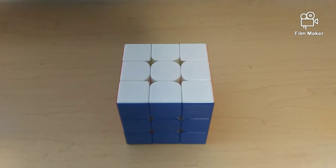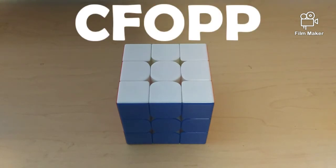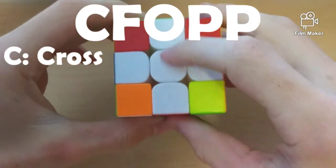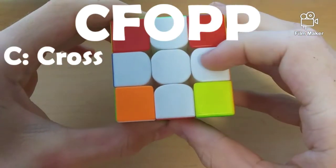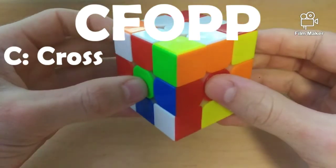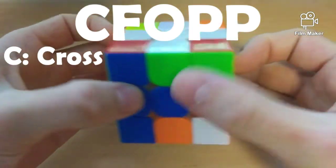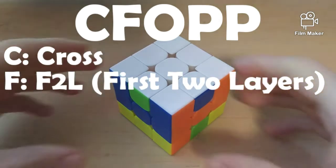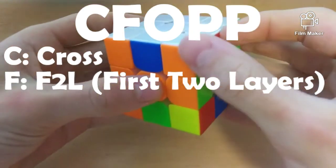First, I will explain what the acronym CFOPA or CFOPI stands for. Similar to CFOP, starting off we have C, and C means cross. But in this method, it doesn't matter how you solve the cross. It does not need to be correct. Next up, we have F, which stands for F2L, and this means the first two layers.